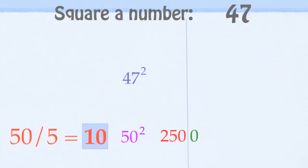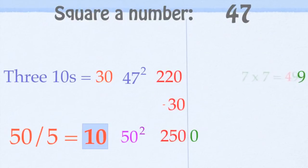Now we're 3 away, so 3 10's are 30. We subtract 30 from 250, and we get 220. And then 7 times 7 is 49. We bring our 9 over, 2209.